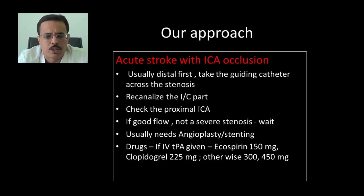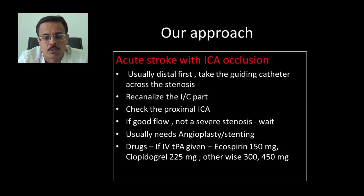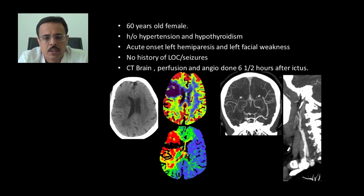In acute stroke patients with ICA occlusion, we usually recanalize the distal lesion first — taking out the clot in the brain circulation. We take the guiding catheter across the stenosis, recanalize the intracranial artery, then check the proximal ICA. If flow is adequate without serious stenosis, we wait; if needed, we do angioplasty, and if that won't keep the artery patent, we place a stent. Regarding antiplatelet drugs: if IV tPA was given, we use aspirin 150 mg and clopidogrel 225 mg; otherwise, aspirin 300 mg and clopidogrel 450 mg after stent placement.